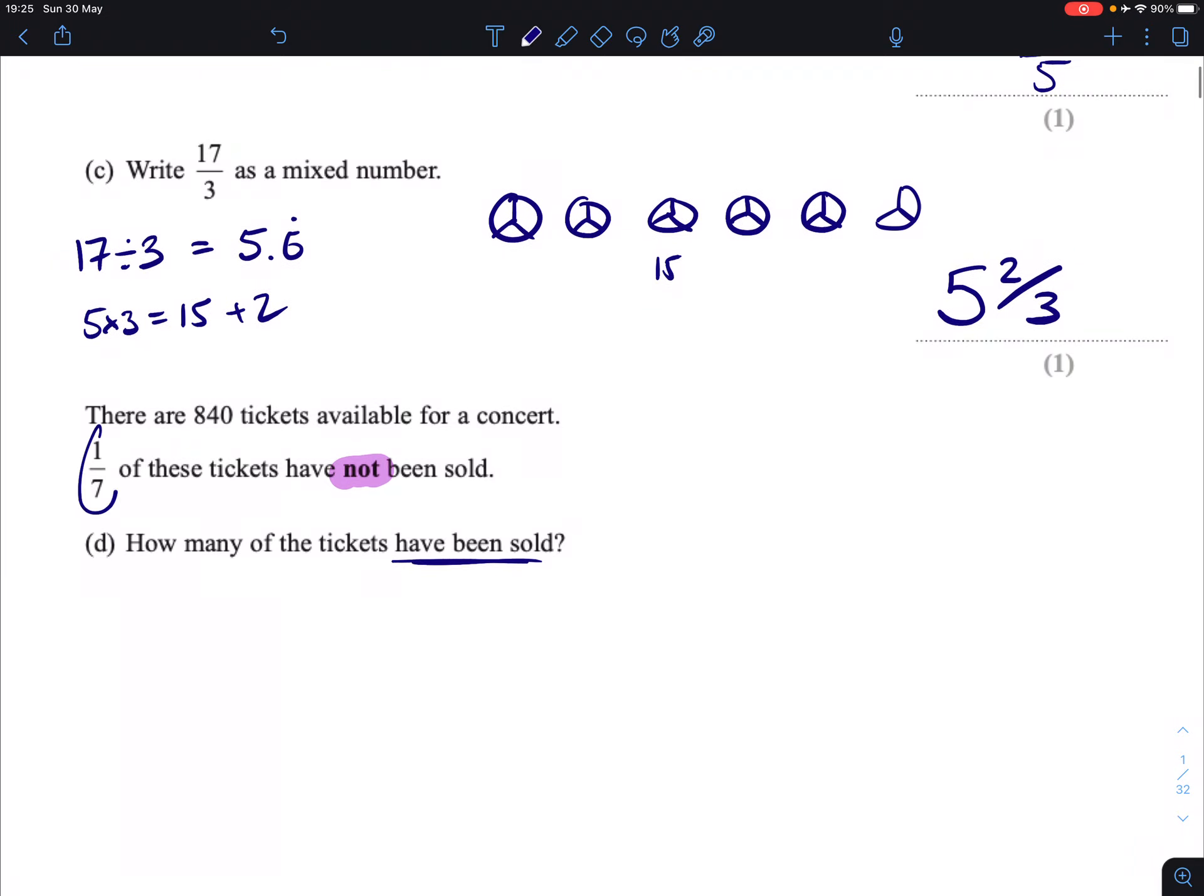So we're not interested in the seventh that weren't sold. We're interested in the ones that were sold. So that means that 6 sevenths were sold. So we're going to try and figure out 6 sevenths of 840.